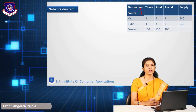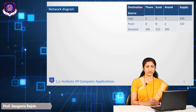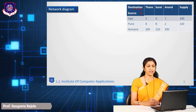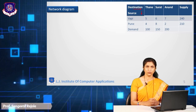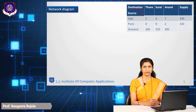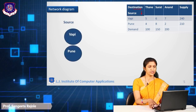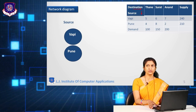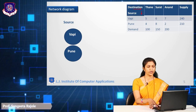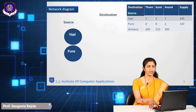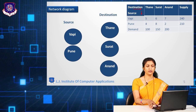Puni can supply only 210 products. The destination demands are given row-wise: demand for Thane is 100, demand for Surat is 150, and demand for Anand is 200. Now we will see how it is represented in a network diagram. We have taken two sources — Wapi and Puni — and three destination points: Thane, Surat, and Anand.